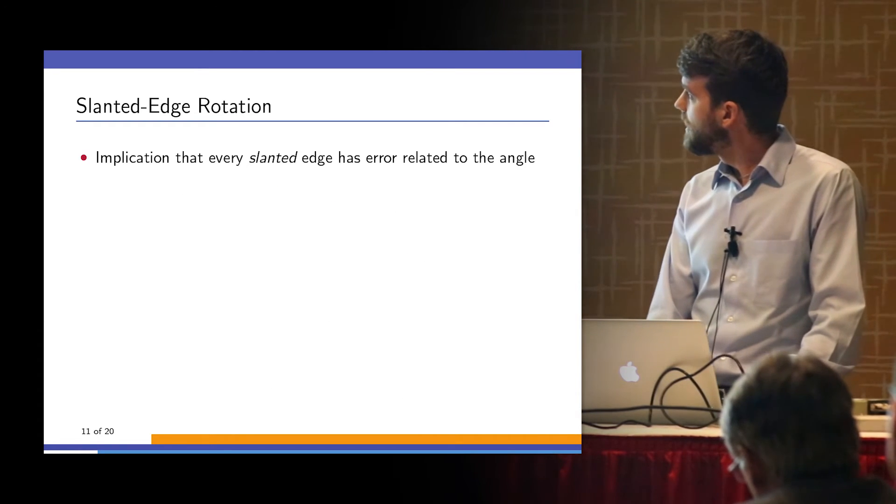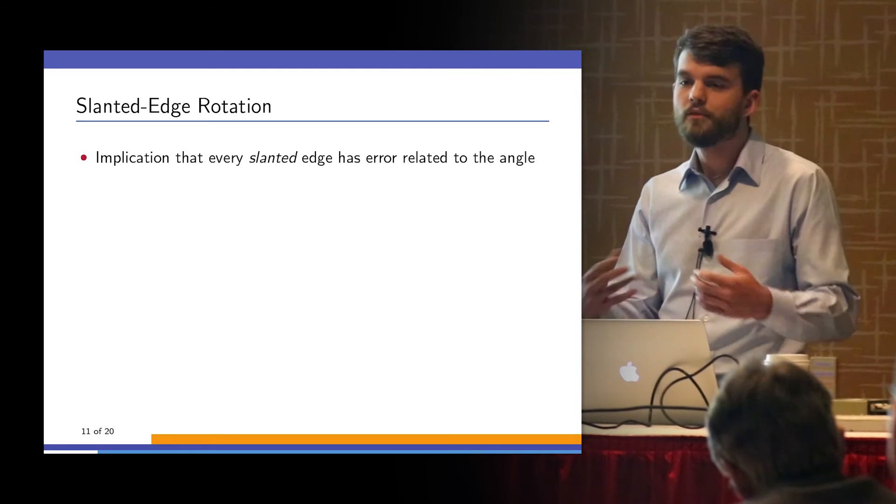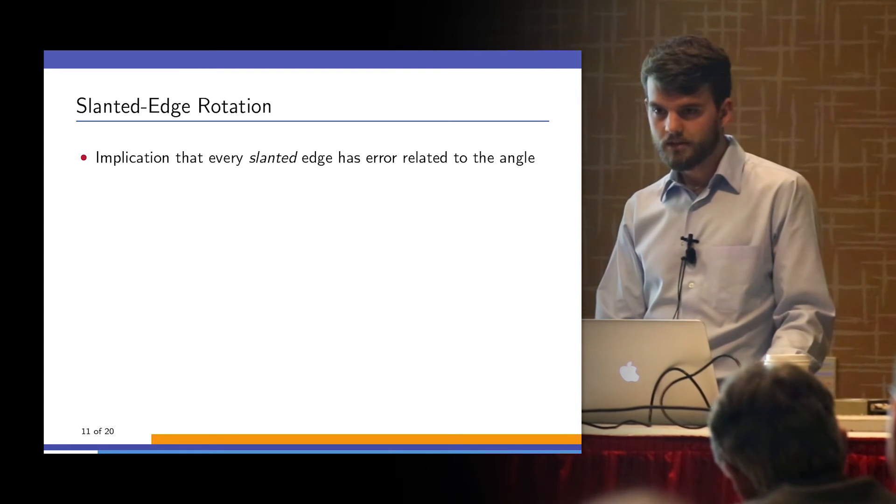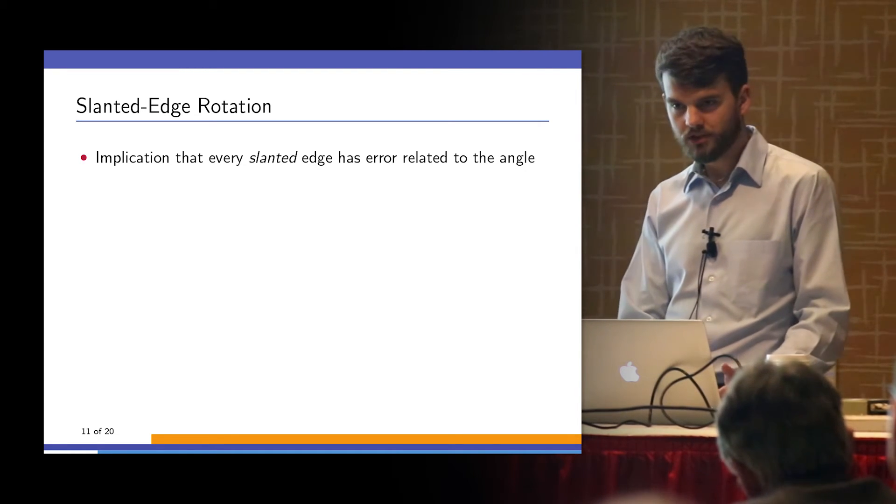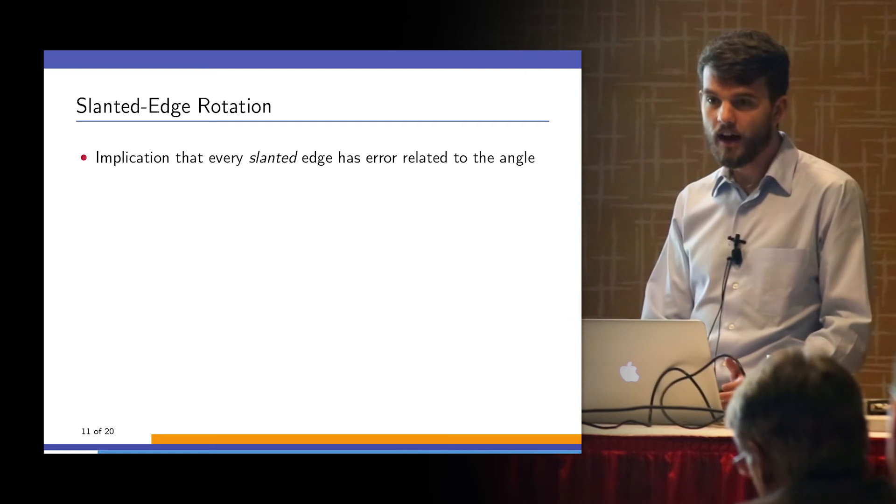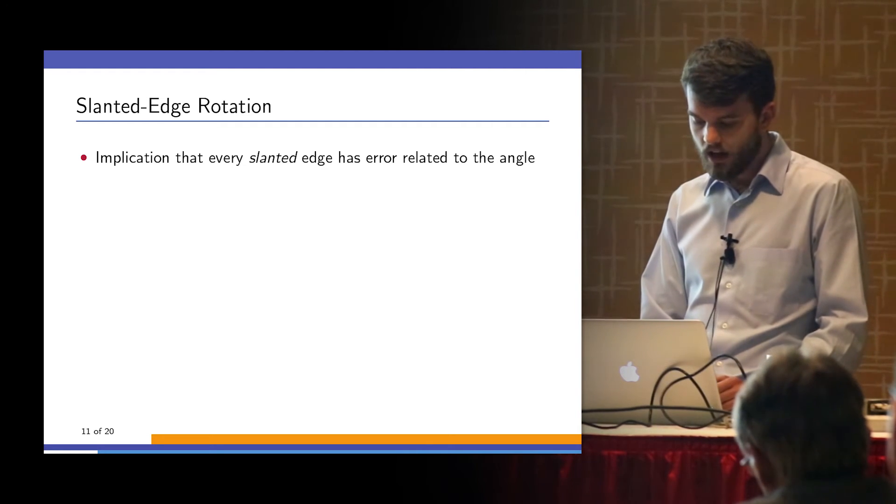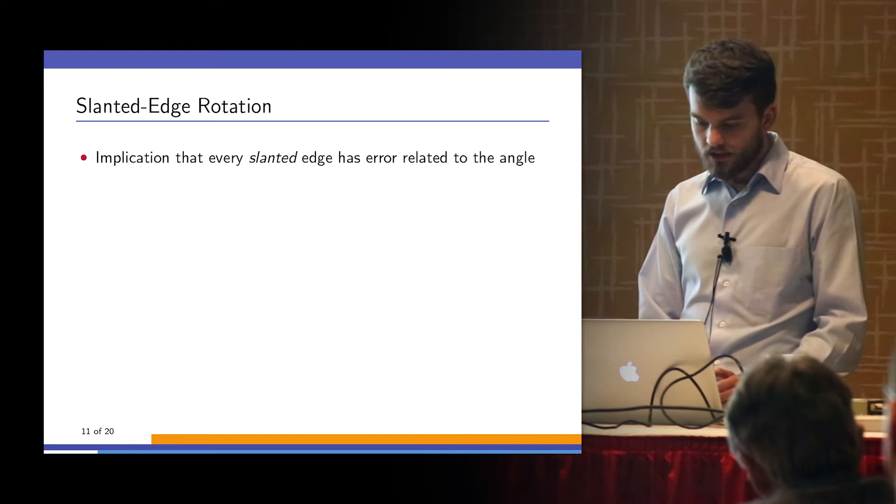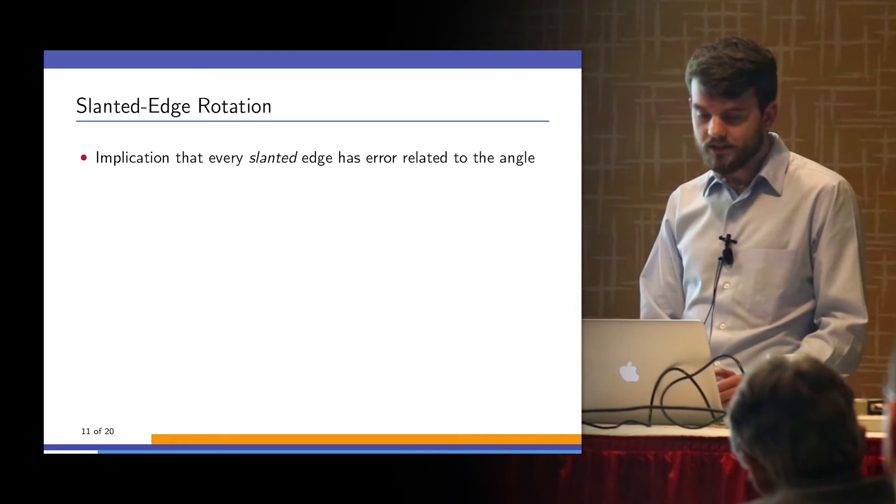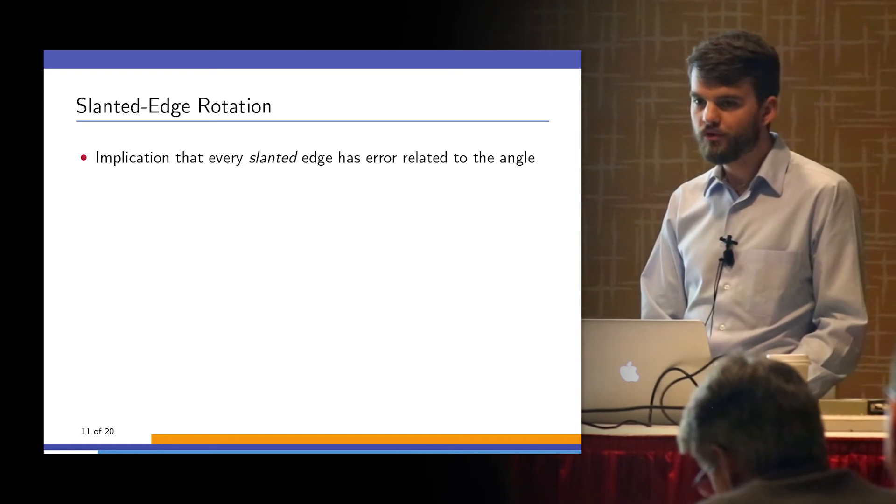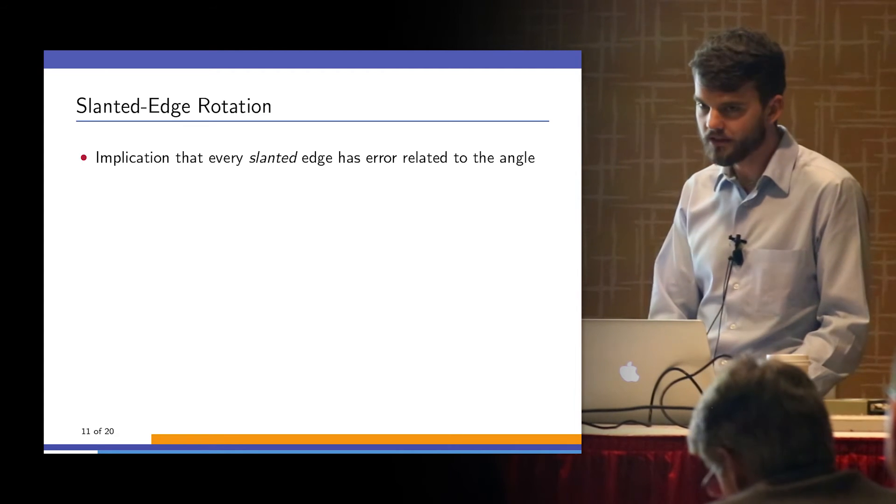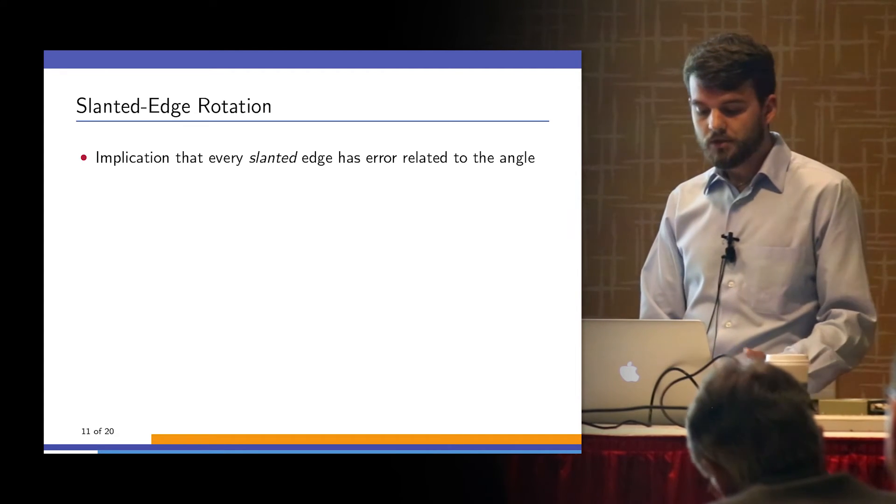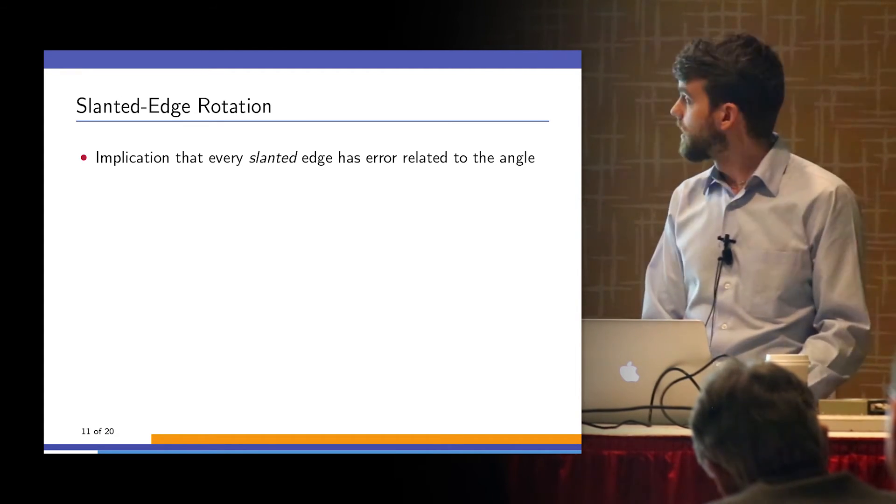Every slanted edge has an error associated with it. When you're close to zero degrees, around five degrees which is the standard, you're talking about an error of something like 1.6%, which is fairly insignificant but not completely insignificant. If you want to be truly accurate, there needs to be some kind of correction factor applied.